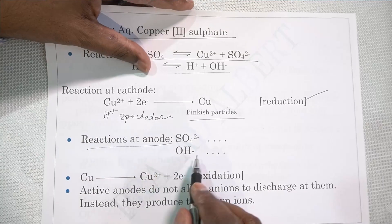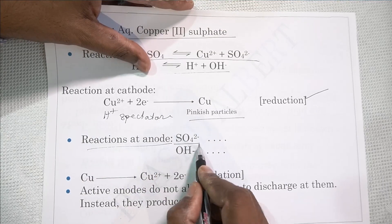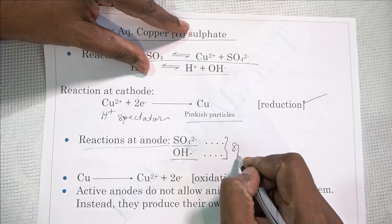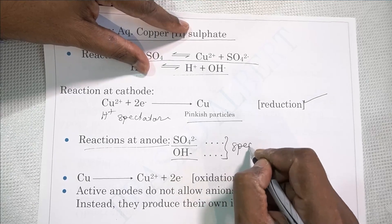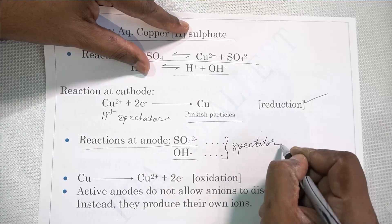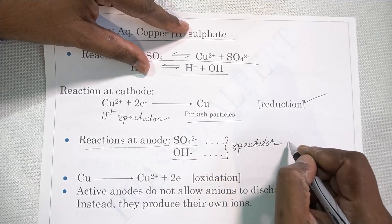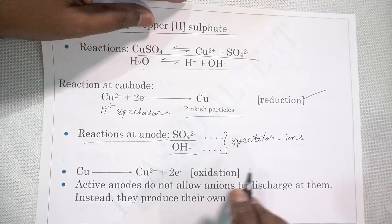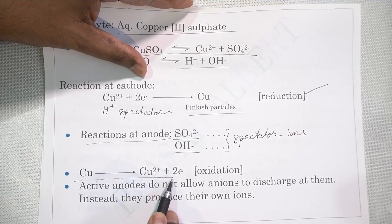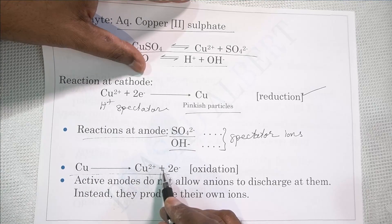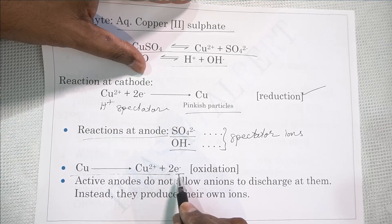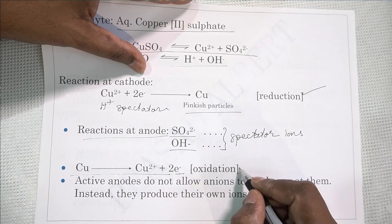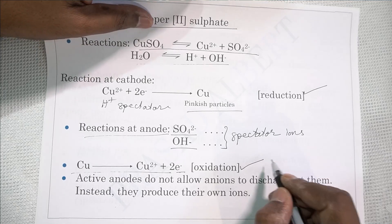The reaction at the anode: sulfate ion and OH⁻ ion come to the anode, but both are spectators here because the principle of active anode is involved. The anode produces its own ions — copper gives Cu²⁺ ions and two electrons. Since the substance is losing electrons, it is oxidation.